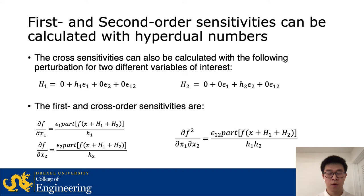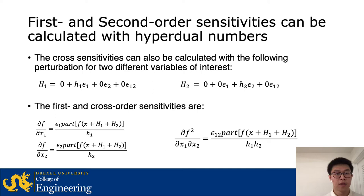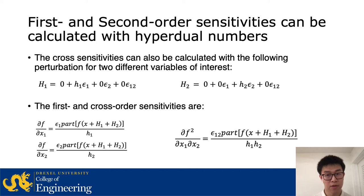We can also calculate cross-sensitivities by, instead of perturbing the ε₁ and ε₂ parts at the same time, giving a perturbation to the ε₁ part of one variable and the ε₂ part of the other variable. This allows us to find the two first-order sensitivities for either variable, as well as their cross-sensitivity, similar to the second-order sensitivity implementation described previously.